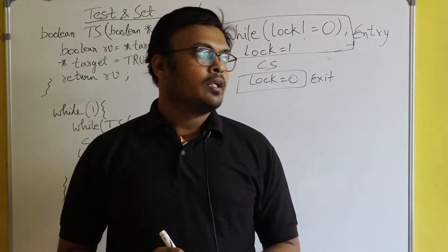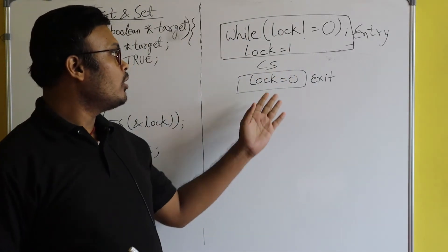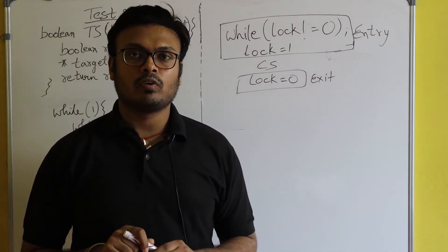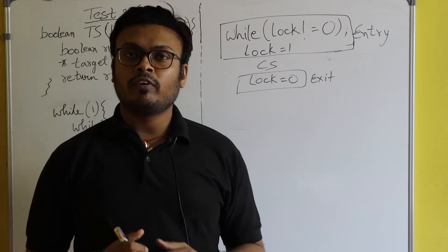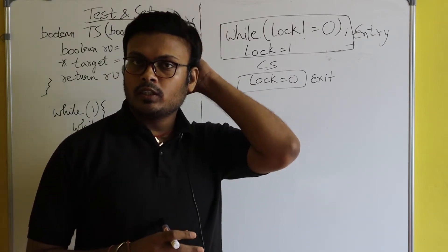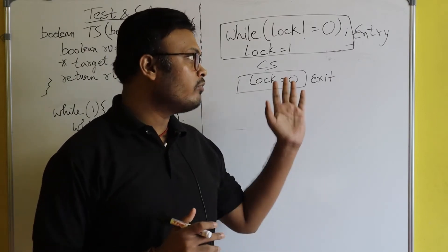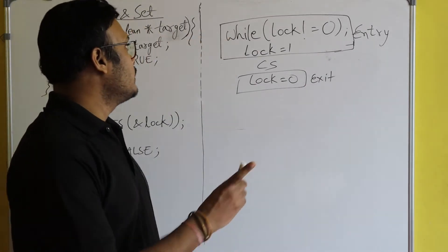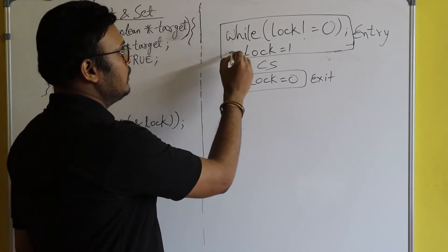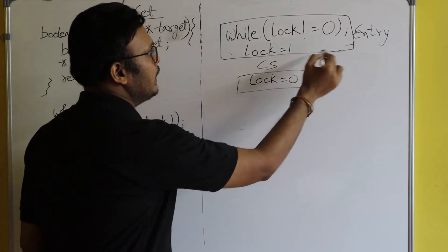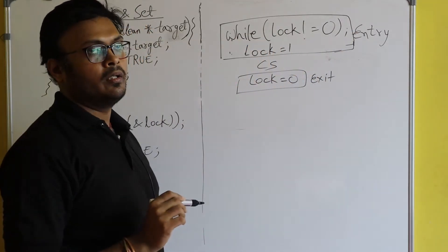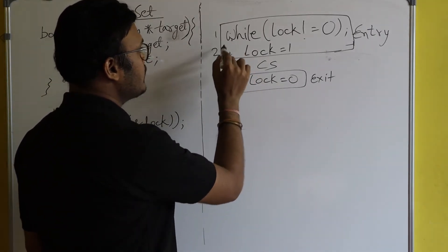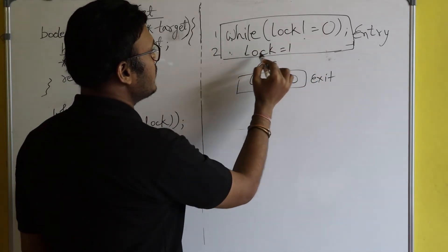In the previous lecture I was discussing the lock variable, which doesn't support mutual exclusion. That is the biggest disadvantage. The reason is that the two lines written in the entry code are not atomic — line one (the while loop) and line two (lock = 1) are separate lines.